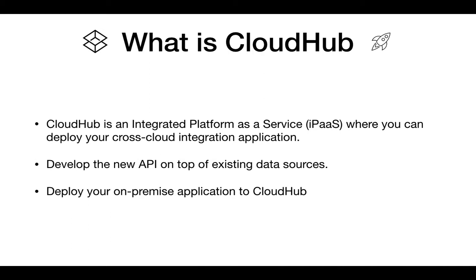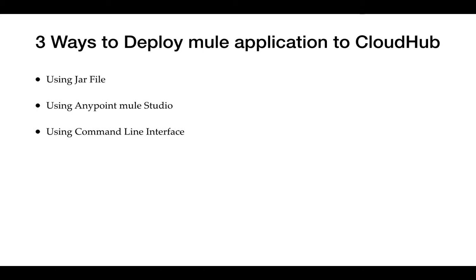Like we developed the API in MuleSoft Anypoint Studio, which is on our local system, and now we need to deploy that into CloudHub. MuleSoft uses CloudHub that is provided by Amazon. CloudHub has different workers — workers define how many instances we want to deploy for our application. If we want to give more bandwidth to our application, we need to give it more workers.